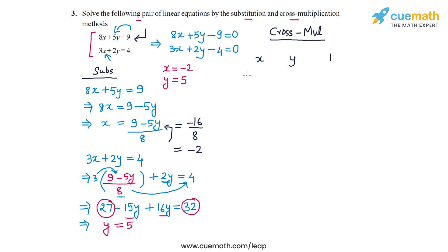And now the coefficients for cross multiplication will be a1 and a2. So first will be b1 and b2, so that's 5 and 2, and then we will have c1 and c2, so that's minus 9 and minus 4. Then we will have a1 and a2, so that's 8 and 3, and then we will have b1 and b2 again, so that's 5 and 2. And now using this grid, we can write the equalities for cross multiplication.